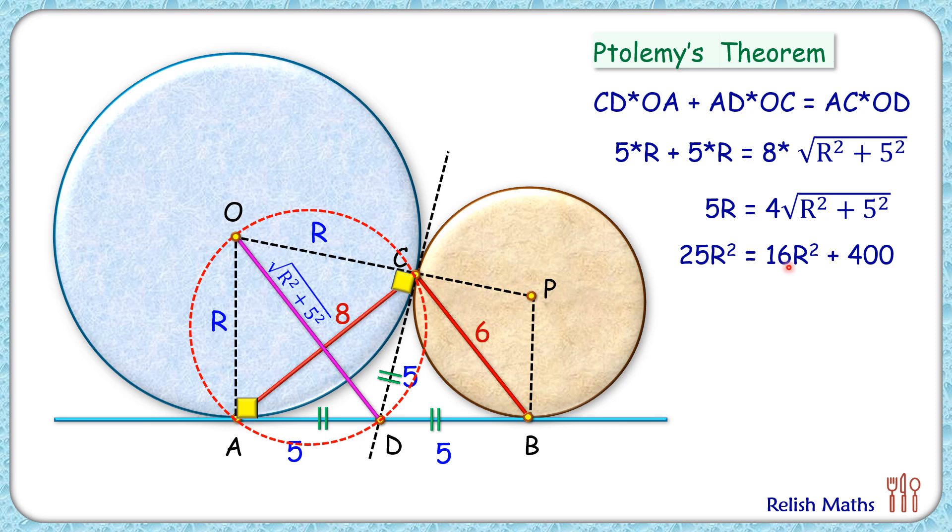Now simplifying this, taking 16 R square on the other side, we get 9 R square is 400, or R square is 400 by 9. Taking square root we get R as 20 upon 3 centimeter, or R is 6.67 centimeter and that's our answer.